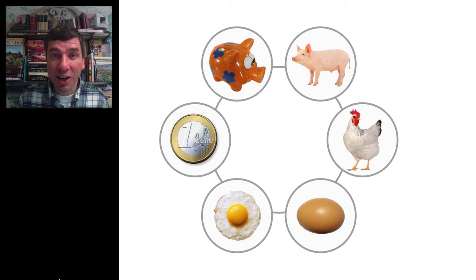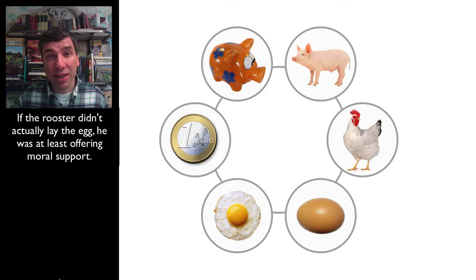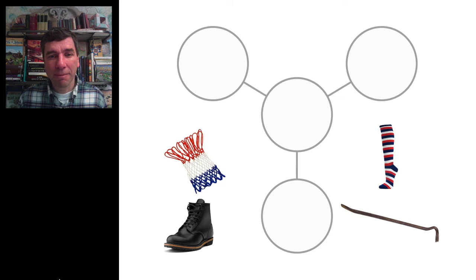The live pig and the rooster are live animals. The rooster lays an egg. An egg can be cracked. The cracked egg is a circle inside a circle, which is the same for the euro, a circle inside a circle. And you can put that into your piggy bank.